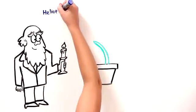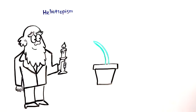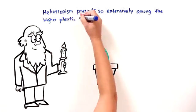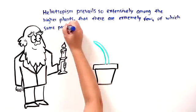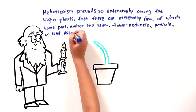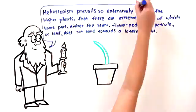Now Darwin did this experiment on tens of types of plants, and he came to the following conclusion, and this is in his own words. Heliotropism, that's what we call the bending towards the light, prevails so extensively among higher plants, that there are extremely few of which some part, either the stem, flower peduncle, petiole, or leaf, does not bend towards a lateral light. Or in more modern English, what Darwin is saying here, that almost every type of plant is sensitive to light and will bend towards the light.